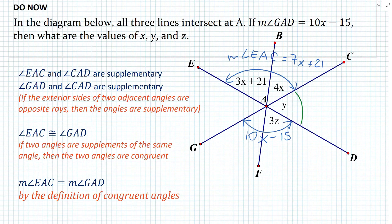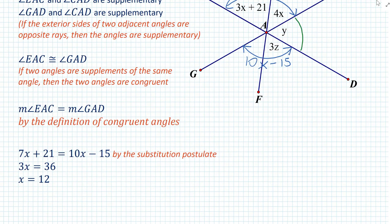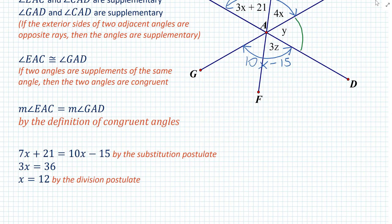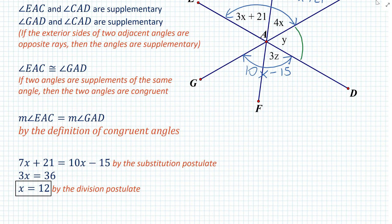All we need to do is substitute these angles in terms of x and solve for the value of x as follows. 7x plus 21 is equal to 10x minus 15 by the substitution postulate. Then we can say that 3x is equal to 36, and finally x is equal to 12 by the division postulate. So we just figured out the value of x.